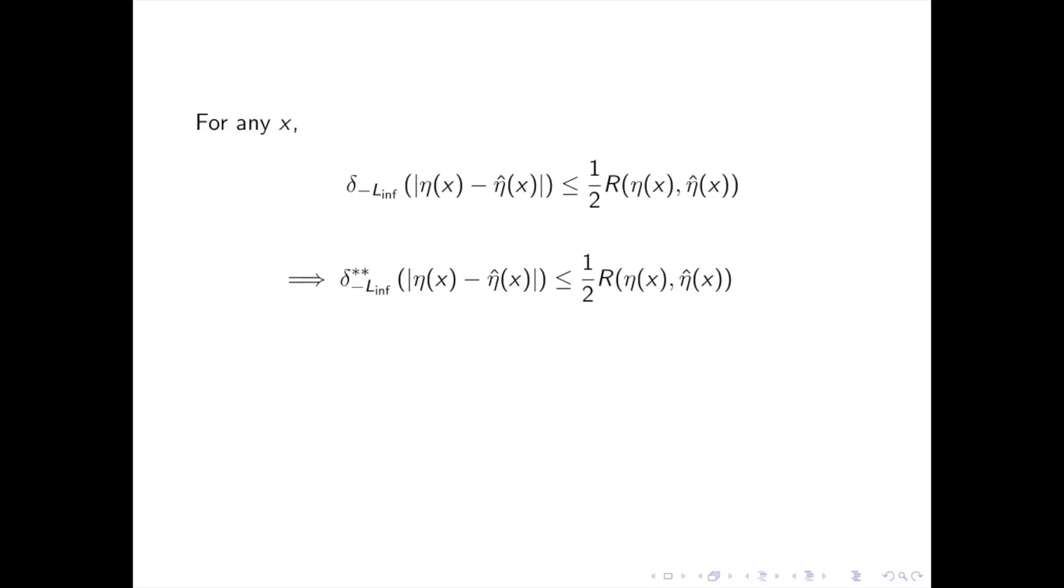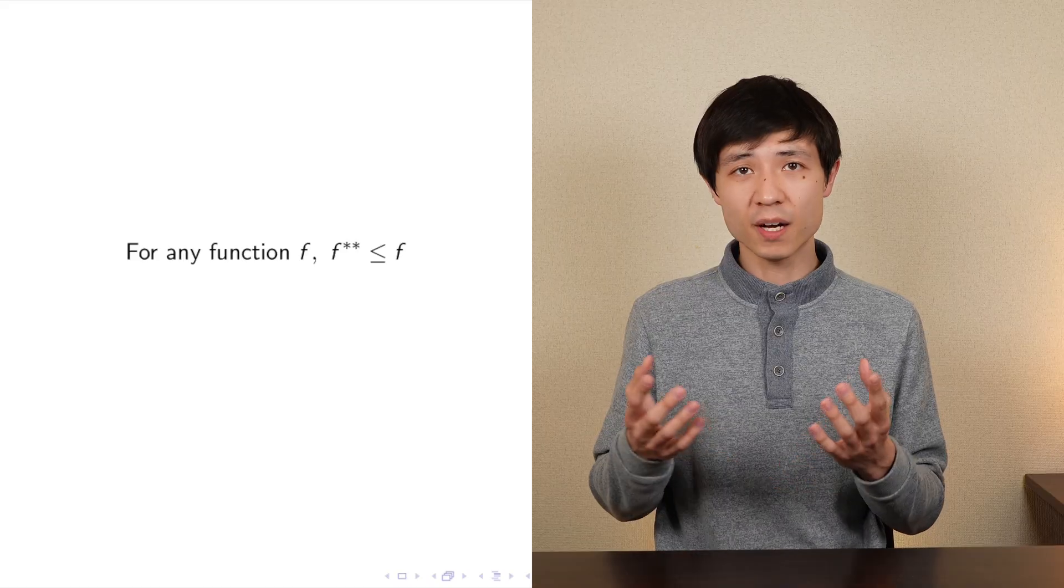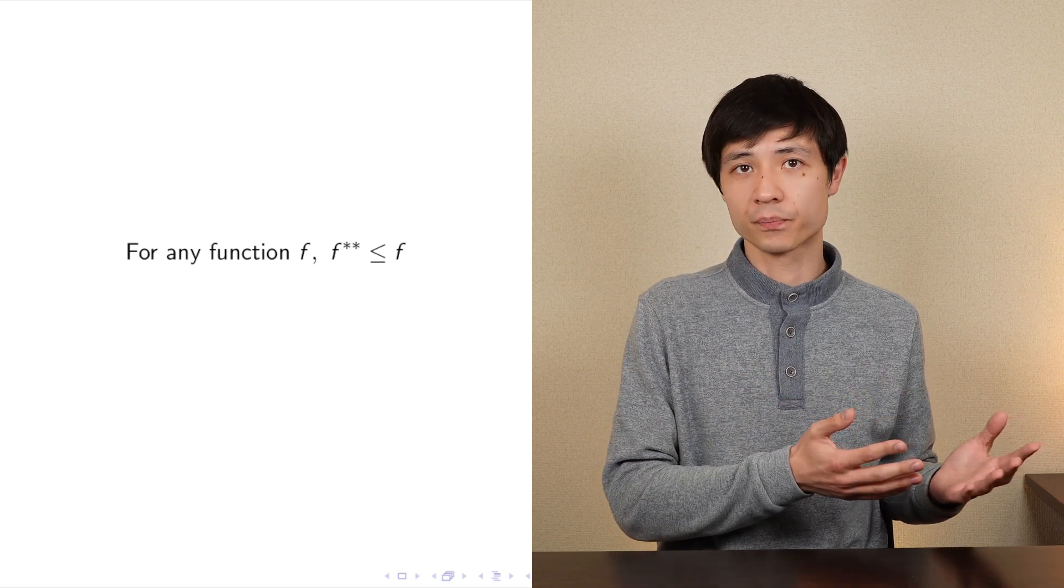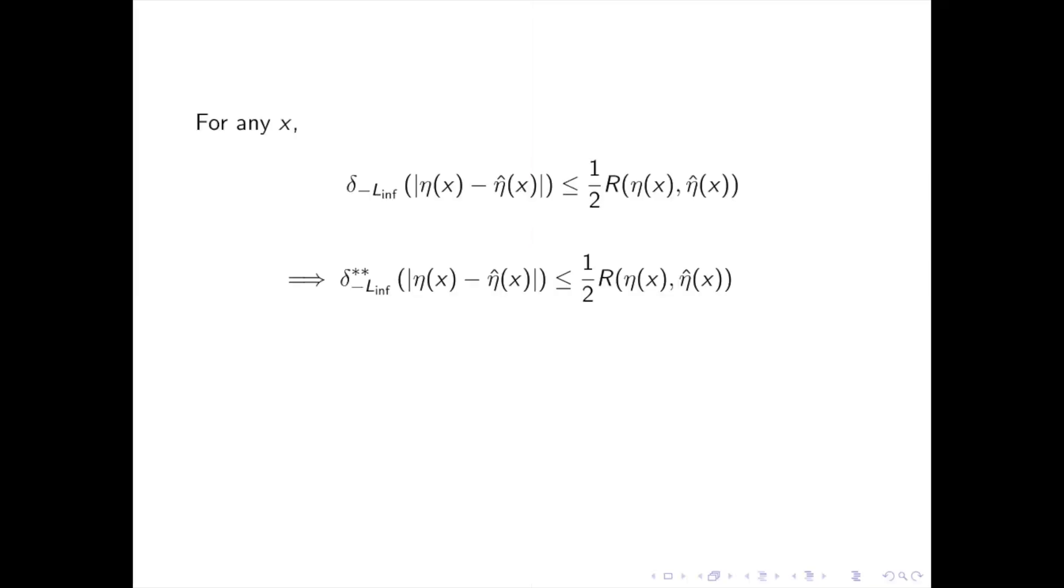Now, this bound is not so friendly because the modulus delta is not a convex function, so we're going to replace it by its double convex conjugate, which is convex. So I'm not going to give any details on the double convex conjugate, but the double convex conjugate of delta is always smaller than delta. The reason why we do that is that, as its name suggests, the double convex conjugate is convex and we will need convexity to apply Jensen's inequality.